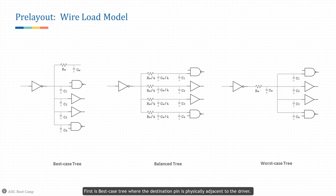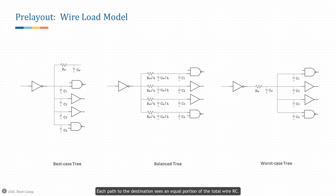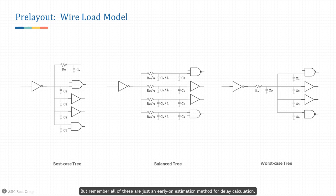The first topology is the best-case tree, where the destination pin is physically adjacent to the driver — none of the wire resistance is in the path to the destination pin, so the resistance contribution is set to zero and the wire load contribution is purely capacitive. The second is the balanced tree, where each destination pin is on a separate branch of the interconnect wire, and each path to the destination sees an equal portion of the total wire RC. The last is the worst-case tree, where all destination pins are clustered together at the far end of the wire, so each destination pin sees the total RC of the wire. In STA we set which topology to use according to our application needs.